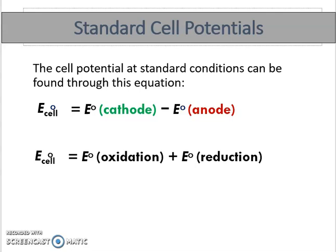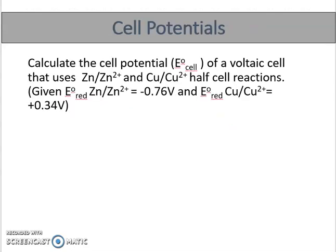Let's go straight to the questions on how to use these formulas. Calculate the cell potential of a voltaic cell that uses Zn/Zn²⁺ and Cu/Cu²⁺ half-cell reactions, given that E⁰reduction for Zn/Zn²⁺ is −0.76 V and E⁰reduction for Cu/Cu²⁺ is +0.34 V.